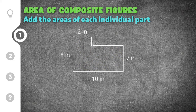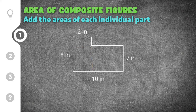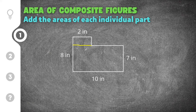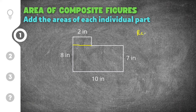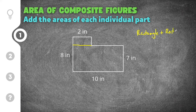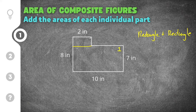It doesn't matter which way you draw your line — it's up to you. I'm going to draw my line here and break it into two separate rectangles. So we have a rectangle here and a rectangle here. To find the area of this composite figure, I have to add the area of rectangle one plus the area of rectangle two. The area of rectangle one is just base times height.